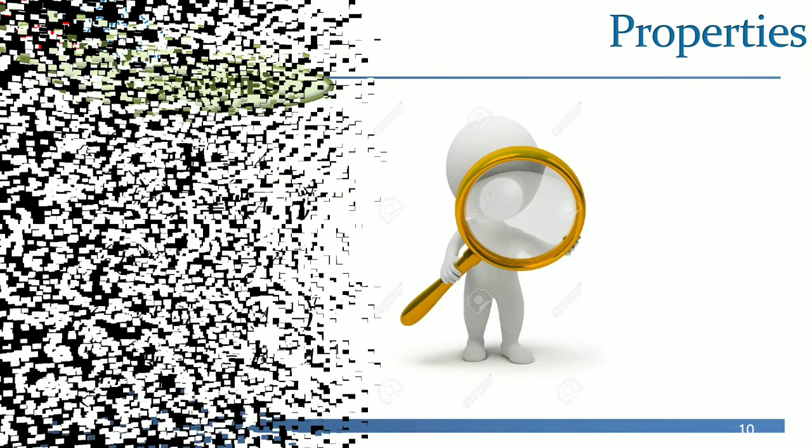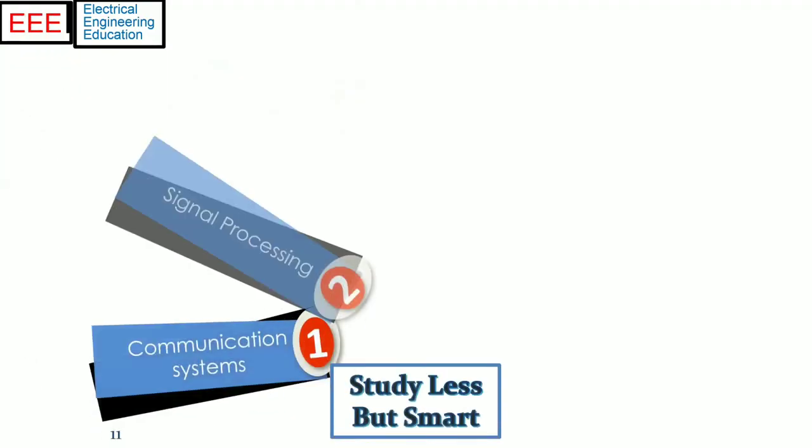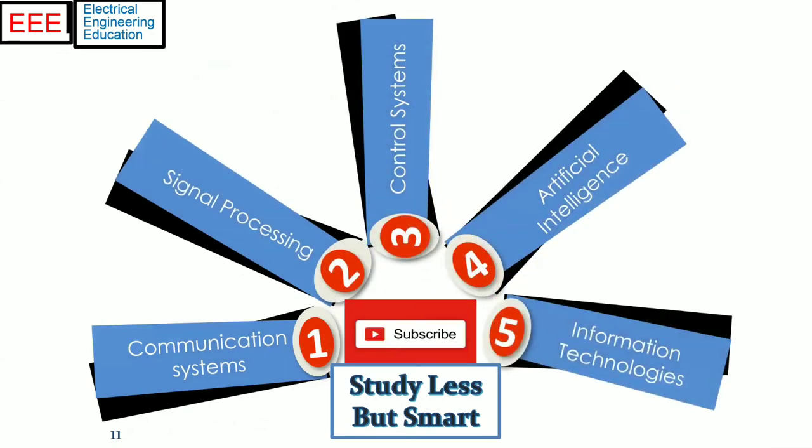The purpose of the channel is education for all, with the objectives to study less but smart, and especially in this tough time of pandemic COVID-19. The course pathways include subjects of communication systems, DSP, control systems, AI, and IT. If these courses are of interest to you, please subscribe to the channel for timely notifications and share with your colleagues, friends and class fellows so everyone have access to free education.